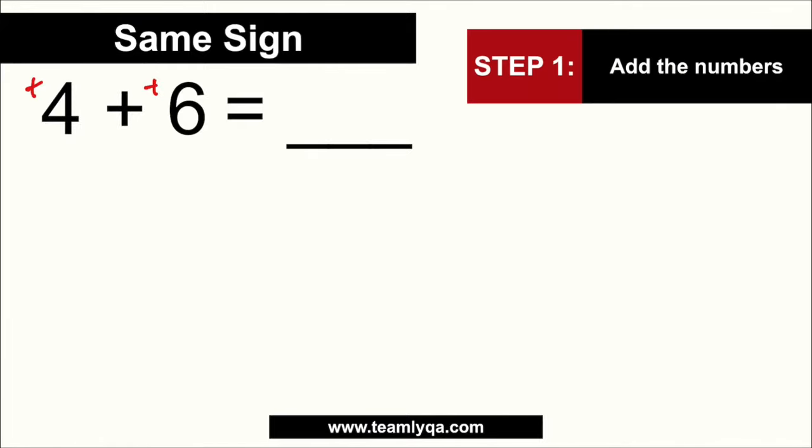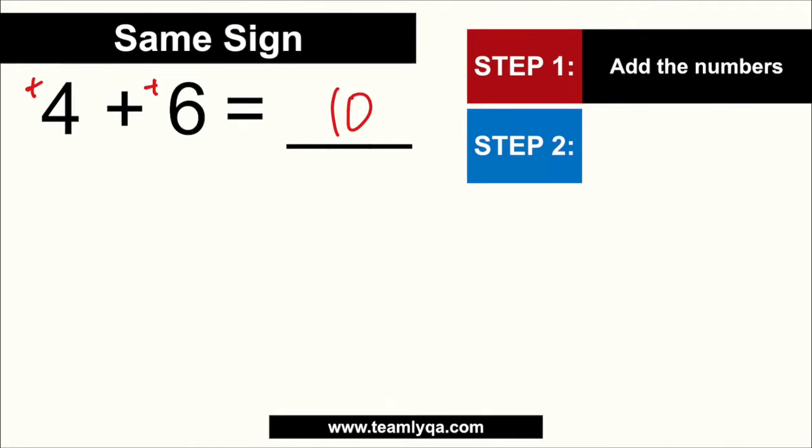Now that we know that, and we have that squared away, we can talk about yung rules governing yung additional integers. So let's take this for example. 4 plus 6. Yung 4 plus 6 pareho silang positive. So this is positive 4 plus positive 6. Ang gagawin mo lang is, step 1, you add the number. So 4 and 6. 4 plus 6 is 10. And then step 2 is, you copy the sign. So ang sagot dito is positive 10 or 10 na lang. Kasi pag sinabi natin 10, unless sabihin mong negative, positive sya. So the answer is 10.